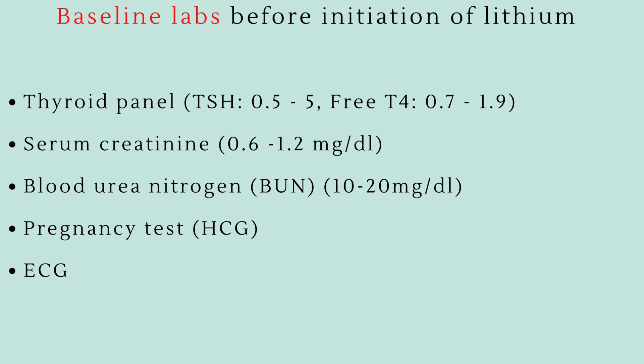The reason we do a pregnancy test is to avoid risk of Epstein anomaly. Know your lab values: BUN is 10–20, serum creatinine is 0.6–1.2, TSH is 0.5–5, and T4 is 0.7–1.9. For test purposes, they may ask about urine specific gravity, which is related to kidney function.